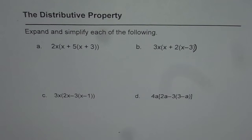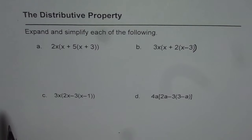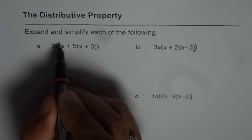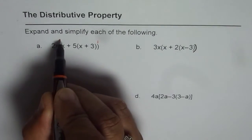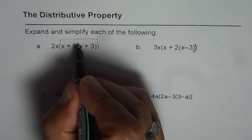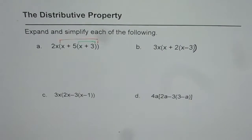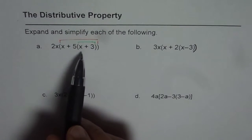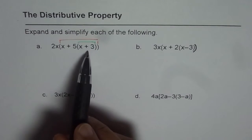The distributive property — expand and simplify each of the following. In these four examples, we will be applying the distributive property twice. As you can see, there are two sets of brackets: an outside set of brackets and a set of brackets inside. In such questions, we apply the order of operations, so we will first open the inside brackets and then move out.